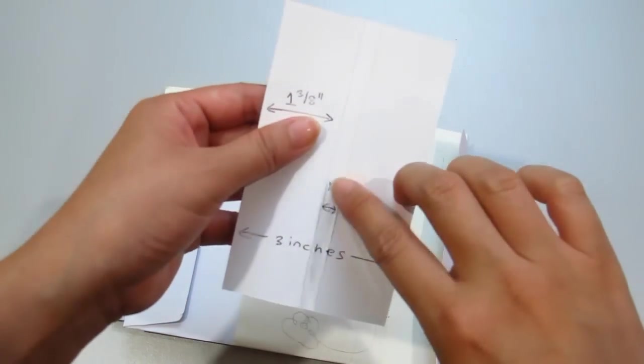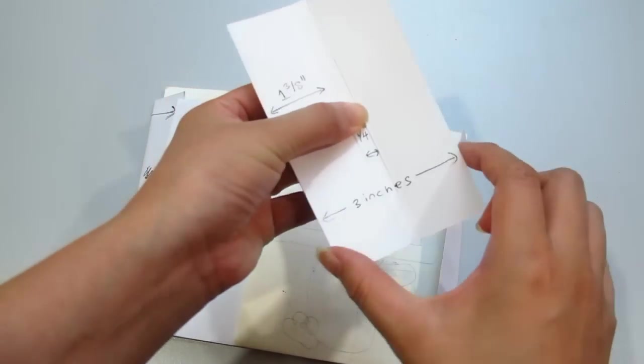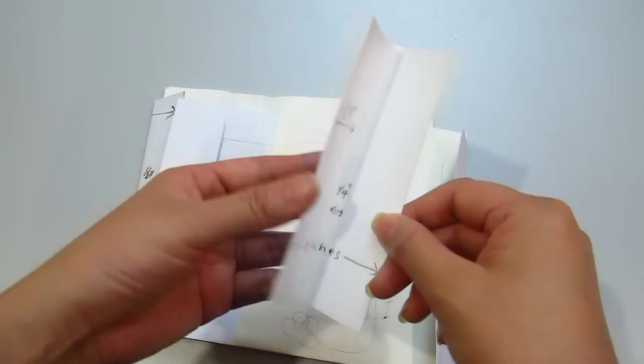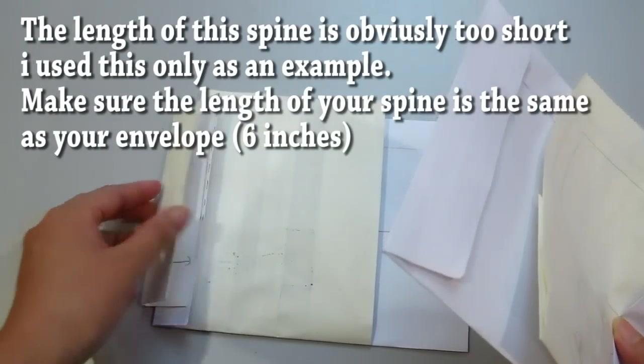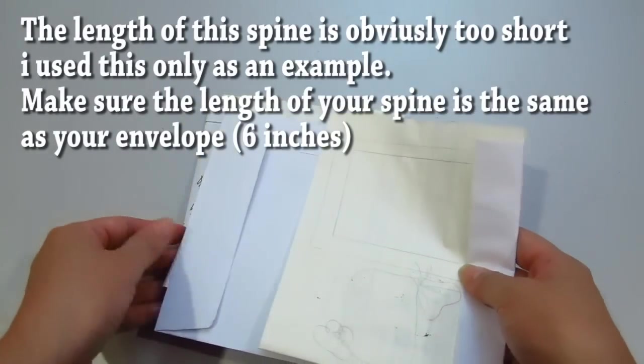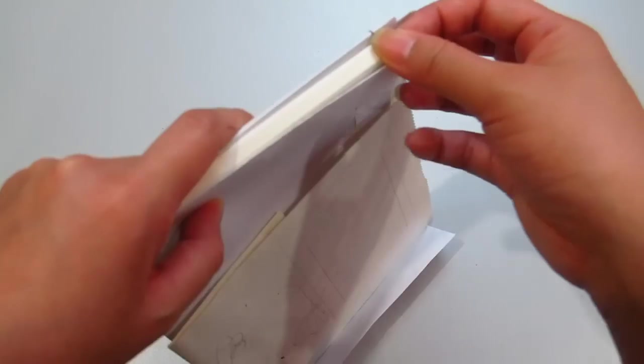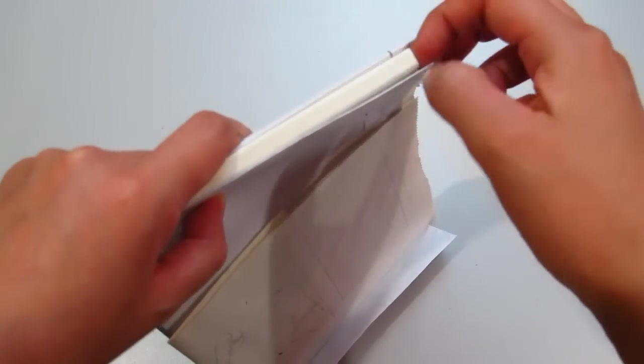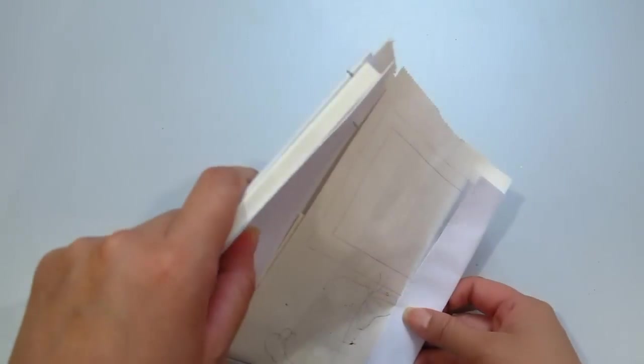Here I have the measurements. Here's about one and three eighths, and I score. Then after a quarter inch later I score again. This whole thing is about three inches. So when you score you have a spine, and what I do is that I just stick the spine in the middle like this.